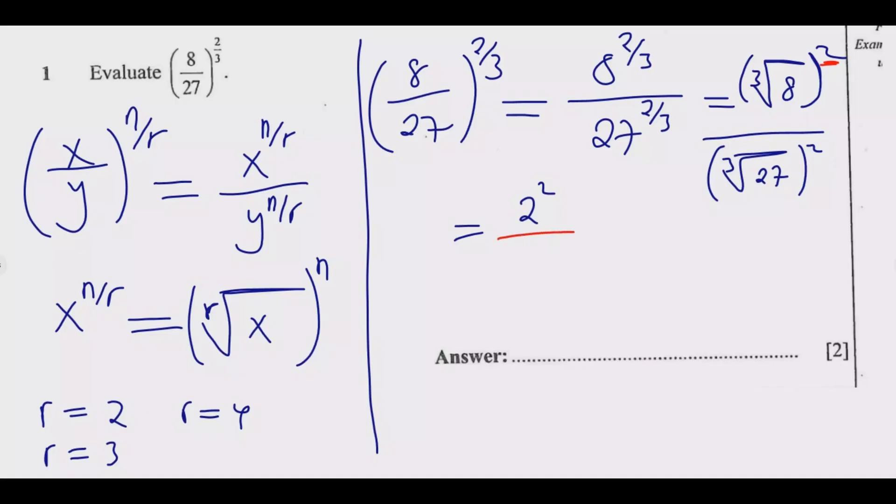Then we have, which number can we multiply by itself 3 times to give us 27? What is the cubic root of 27? You see 3 times 3 is 9 times 3 is 27. So I'm going to have 3 down here. Now the square remains, the 2. So now we simplify this one.